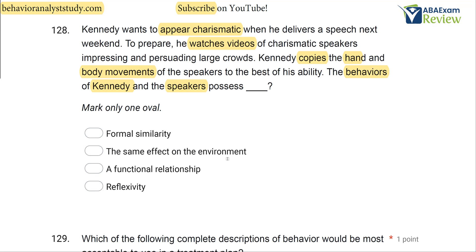The behaviors of Kennedy by copying the speakers now have formal similarity. Remember: form is how something looks — the topography. Function is why it's occurring or the effect on the environment. We know Kennedy is having formal similarity with the speaker. Can we say it has the same effect on the environment? No — we're not sure if it worked. We don't know if Kennedy became charismatic. A functional relationship implies manipulation of an independent variable affecting a dependent variable — that's not what we're doing here. Kennedy is simply imitating.